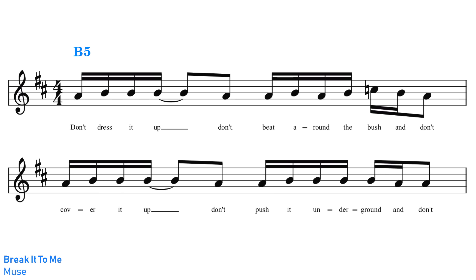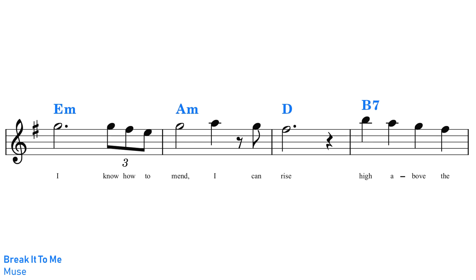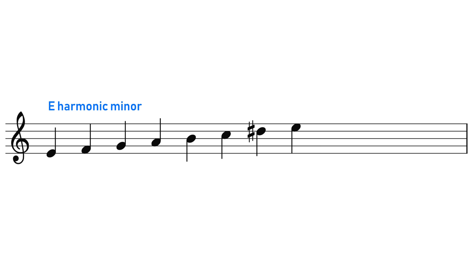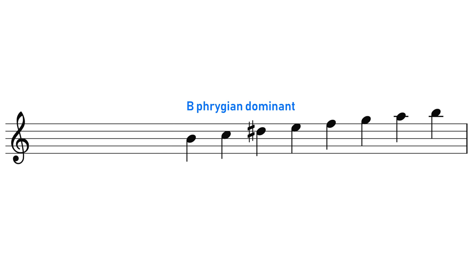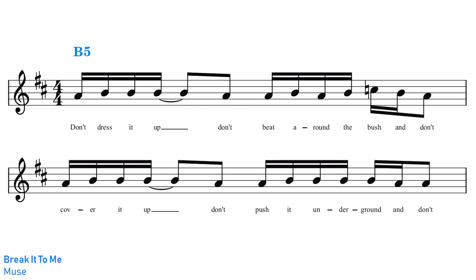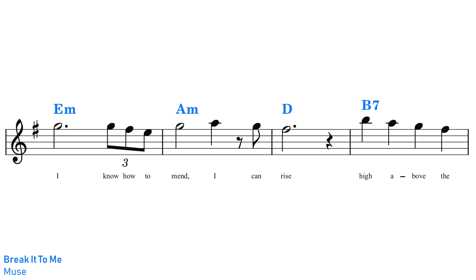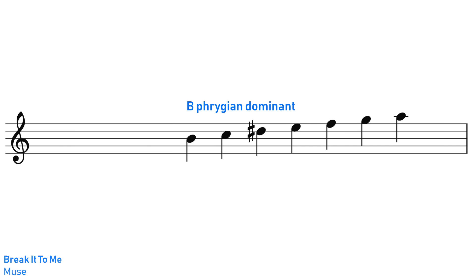Break It To Me by Muse is another good example of the modal quality of Phrygian Dominant. It has a verse in B Phrygian Dominant and a chorus in E harmonic minor. This is noteworthy because E harmonic minor and B Phrygian Dominant have the same notes — they are modes of each other. So the verse and chorus use the same set of seven notes, but in the verse B is being treated as the tonic note and in the chorus E is being treated as the tonic note.